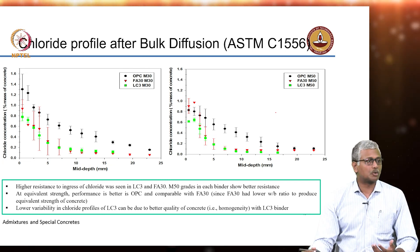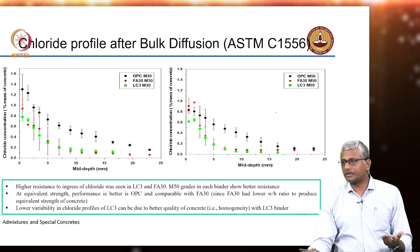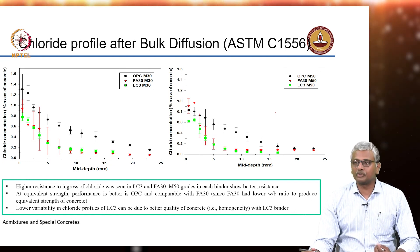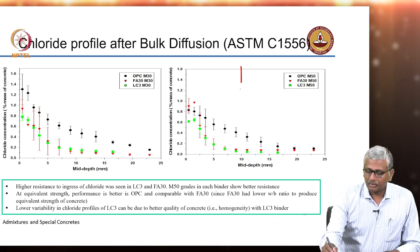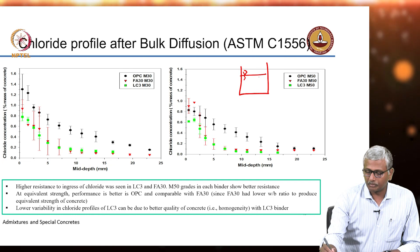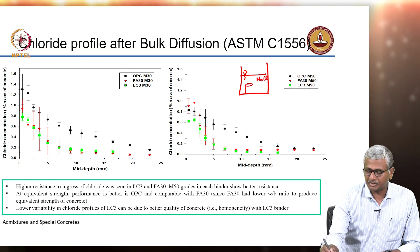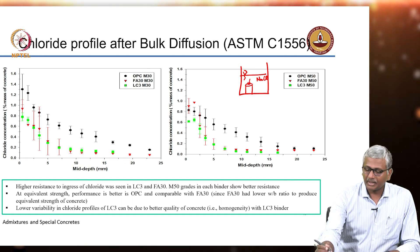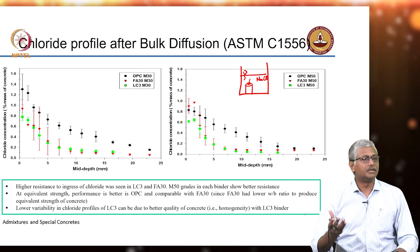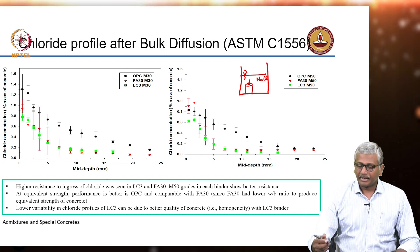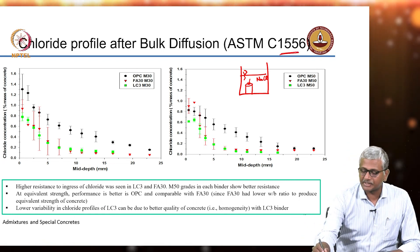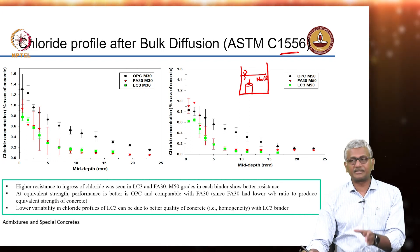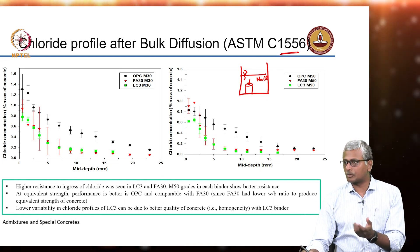The previous methods for chloride testing were based on electrical migration, but for a pure chloride diffusion study you take concrete specimens — typically cylinders — and place them in a sodium chloride solution bath. Only the top surface is exposed; all other surfaces are coated to prevent chloride penetration through them. In the ASTM C1556 method, after 28 days of curing the concrete cylinder is placed in a 15.6% sodium chloride solution.